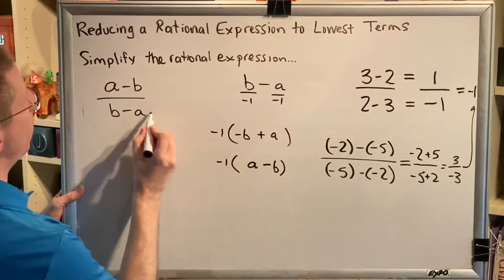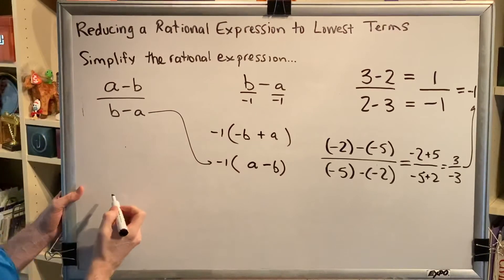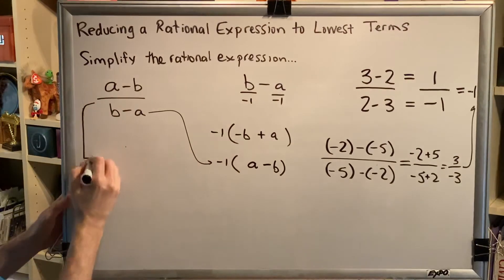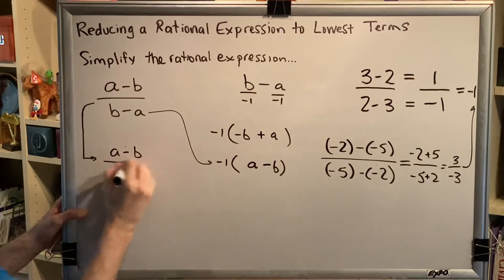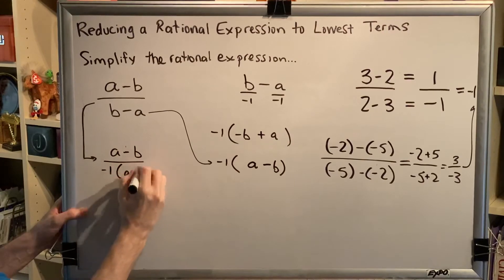So what we've learned is that b minus a is the same as negative 1 times a minus b. And with that, we can make a substitution. So this will be a minus b over negative 1 times a minus b.